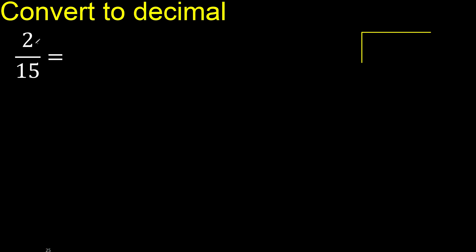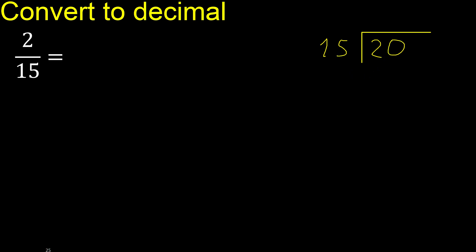2 divided by 15. 2 is less, therefore complete — always complete with 0.